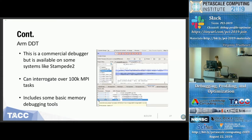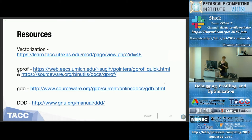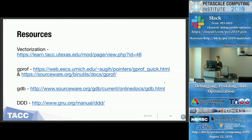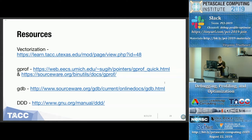These are the links mentioned — we have a tutorial available online about vectorization, an EECS page from the University of Michigan giving a short overview of GPROF, and the full GNU documentation for GPROF, GDB, and DDD. GNU produces a lot of free software that's really reliable and widely used, so going to GNU first for resources is not a bad idea.